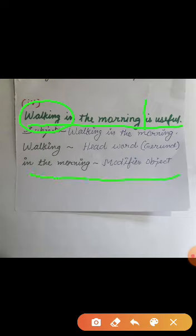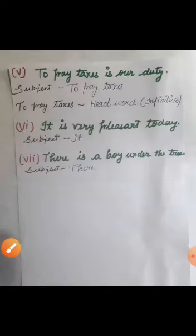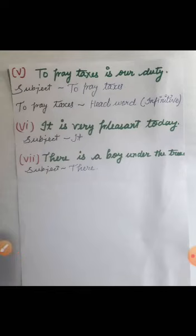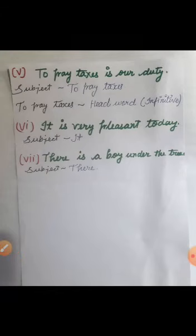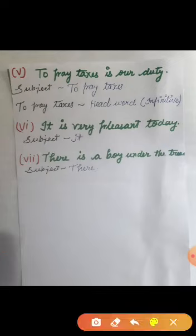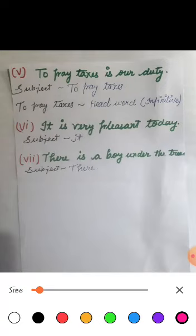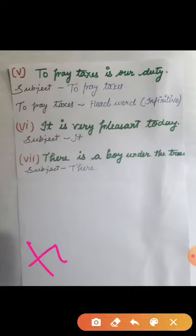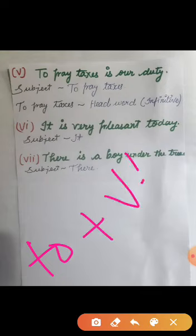Next, the fifth example is: 'To pay taxes is our duty.' In this, both the subject and headward are 'to pay taxes.' See carefully — 'to pay taxes' is an infinitive type. The structure of an infinitive is: 'to' plus the first form of the main verb. This is the infinitive structure.